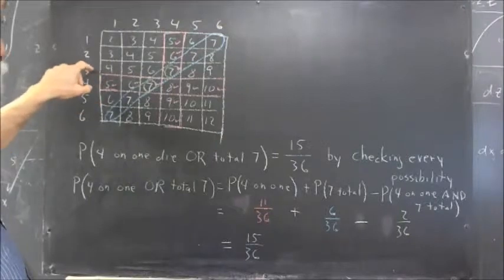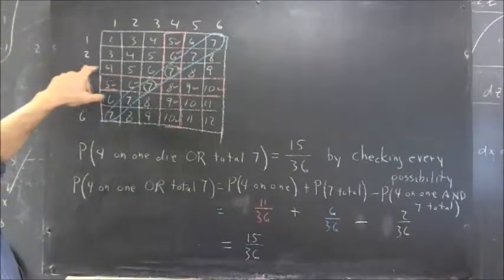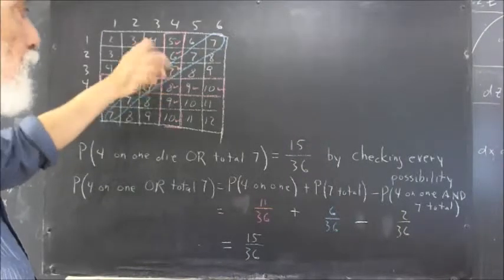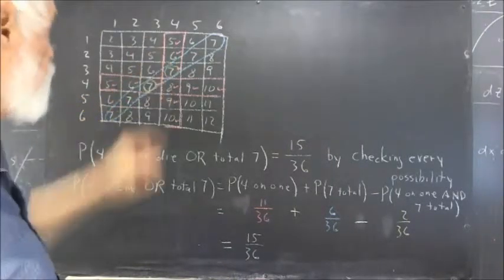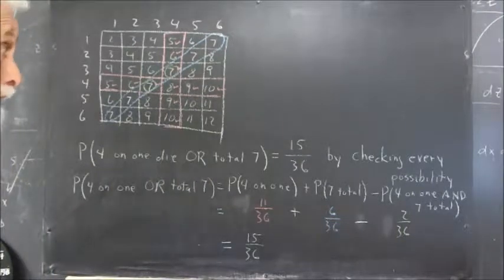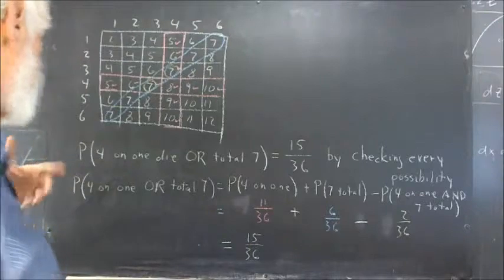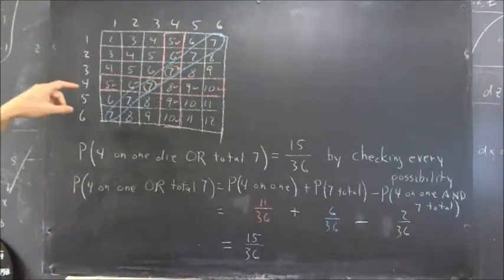We get 3 on the first die. If we get 4 on the second die, we get a 7. So, that's going to count. And, of course, we've got a 4, but it only counts once, even though it fulfills both criteria. And then the 3 and 5, 3 and 6, don't give a 7. There's not a 4.